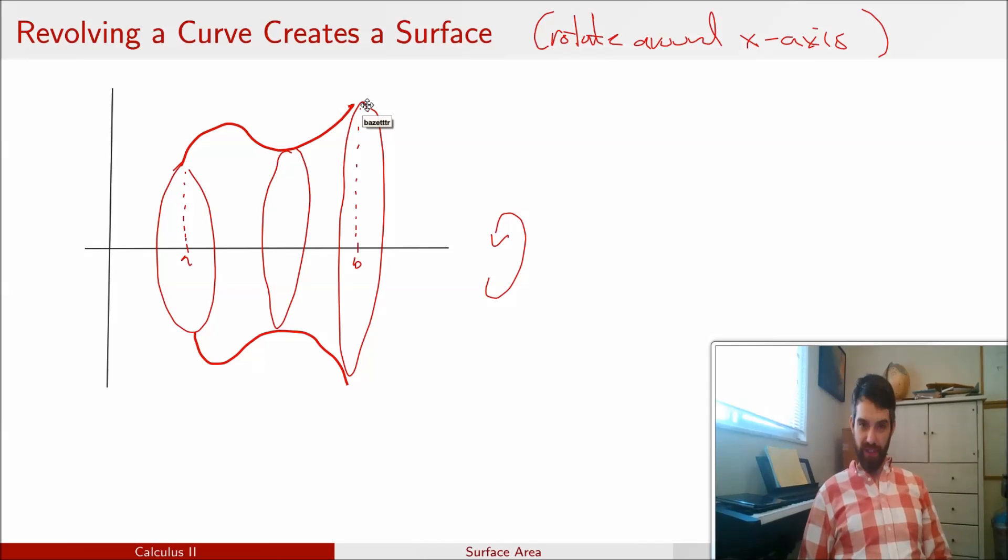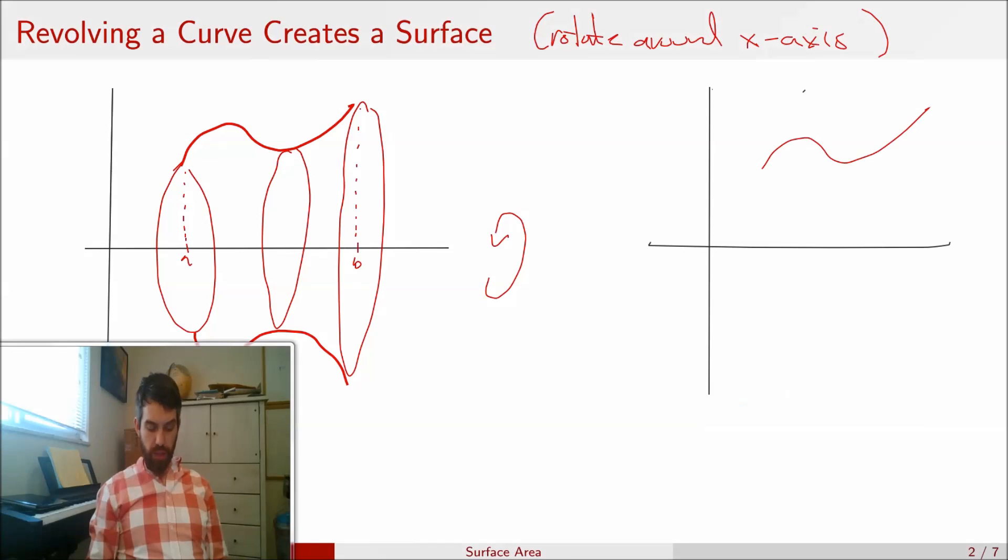So now that I have this surface, this rotation about the x-axis of some curve, my goal is how do I figure out what the surface area of this curve is? So I'm going to draw the picture again, and I'm going to emphasize just one little piece of it. So I've drawn the curve again, and I'm going to focus my attention on one little small section of this.